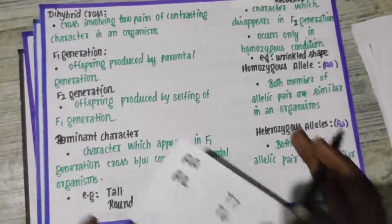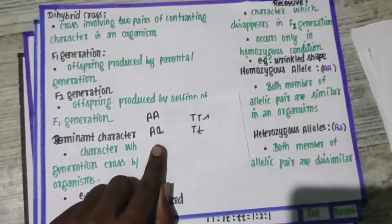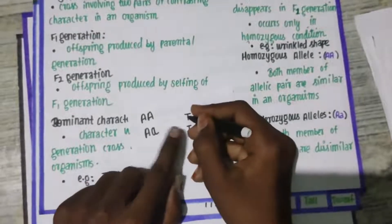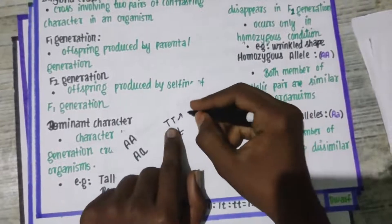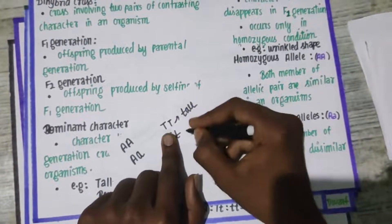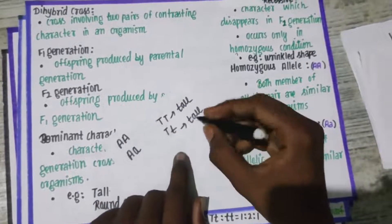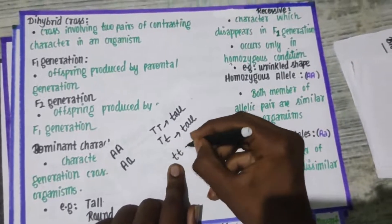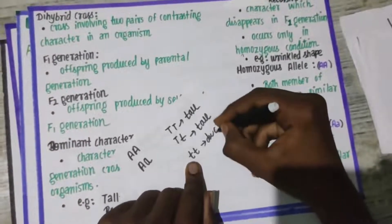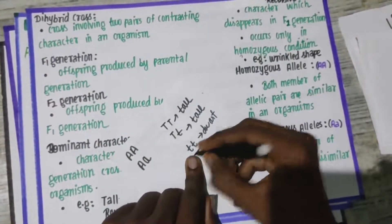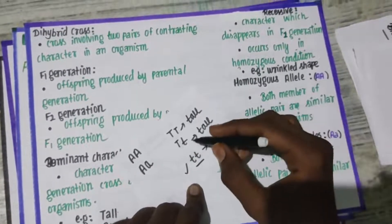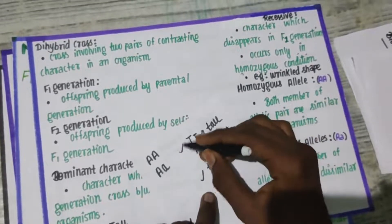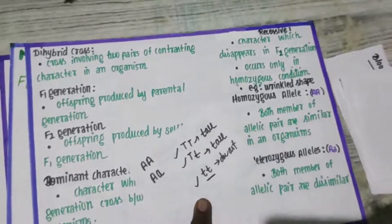This plant is tall, and the capital T represents tallness while the small t represents the dwarf. If you look at small t and small t (homozygous recessive), you see the dwarf. In the homozygous condition you can have capital T capital T (dominant) or capital T small t (heterozygous), and both express the dominant character.